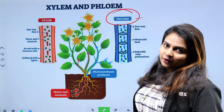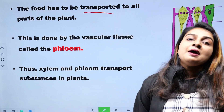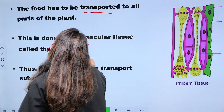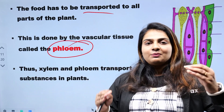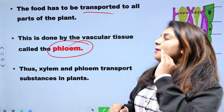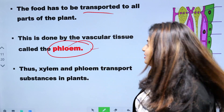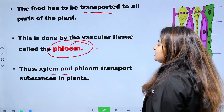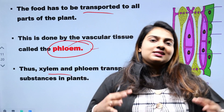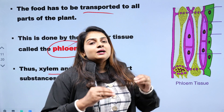Food has to be transported to all parts of plants. We have phloem and xylem — both are vascular tissues. Phloem transports food and xylem transports water. The xylem and phloem transport substances in plants.